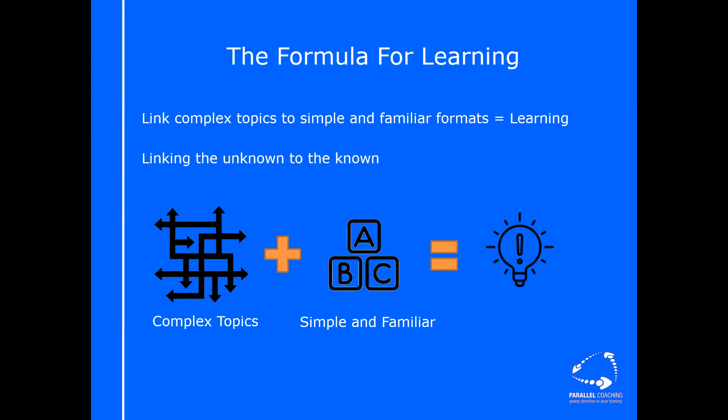So that's why you need to learn it. Now let's have a look at the formula for learning. Most people don't realize there is actually a very clear formula for learning. The formula is to link things that you don't know, this new thing we're trying to learn, and then link that to something that is already familiar to us that we do know.